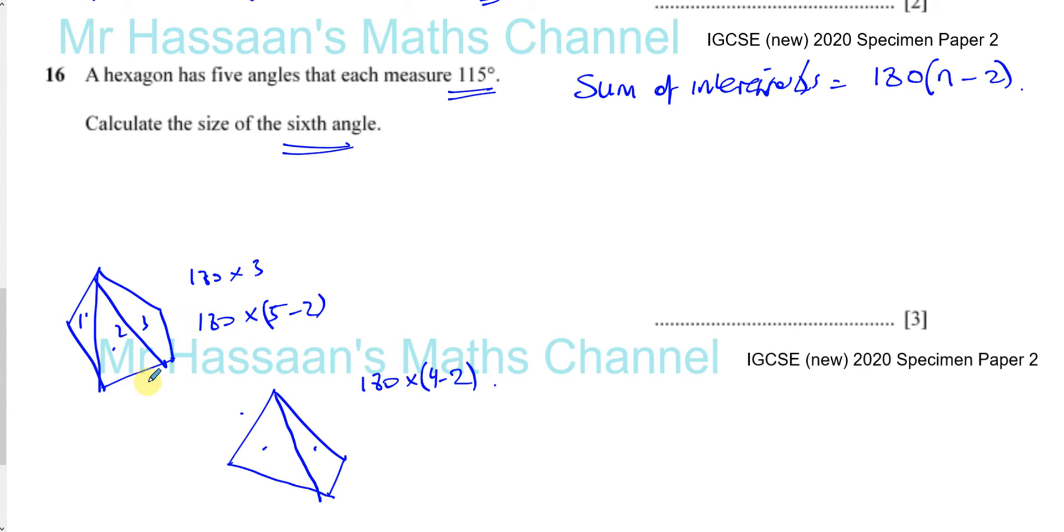So the number of sides in the polygon minus two tells you how many triangles there are going to be in the polygon. So, for example, if you had a hexagon like we have here, that's going to give you a hexagon, one, two, three, four, five, and six.